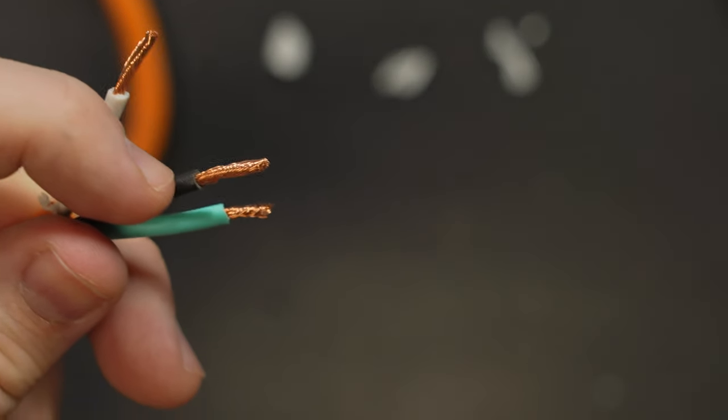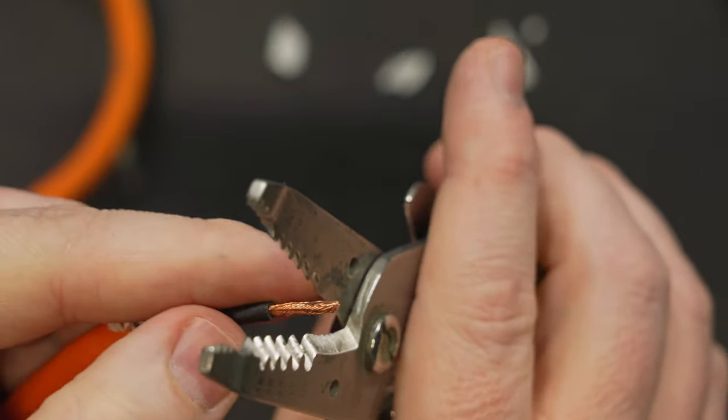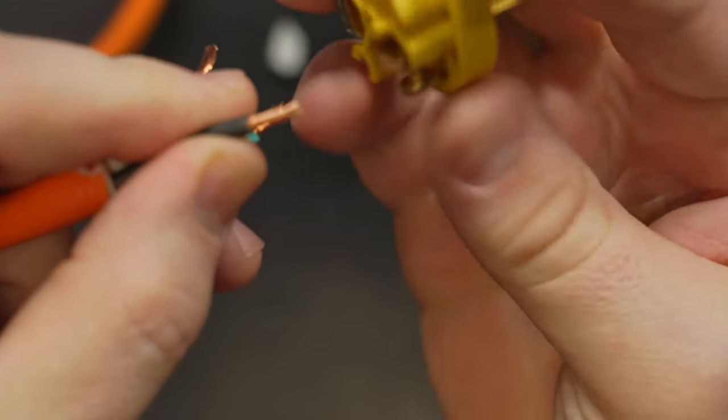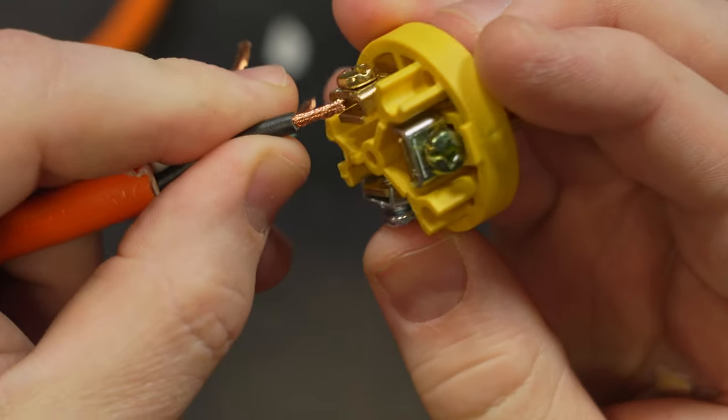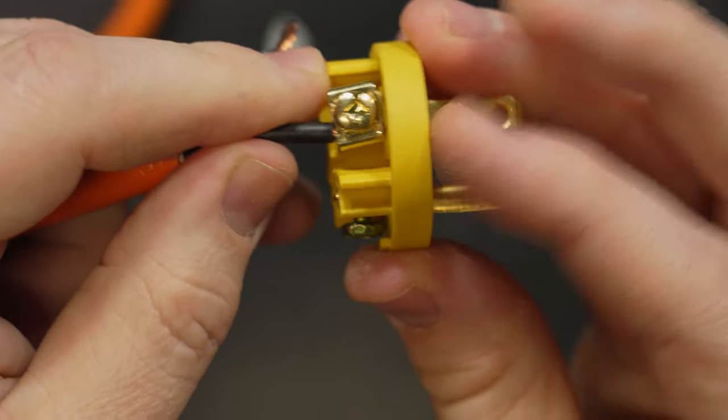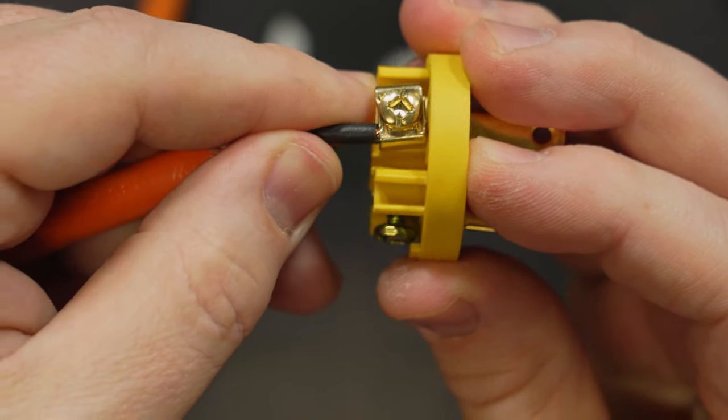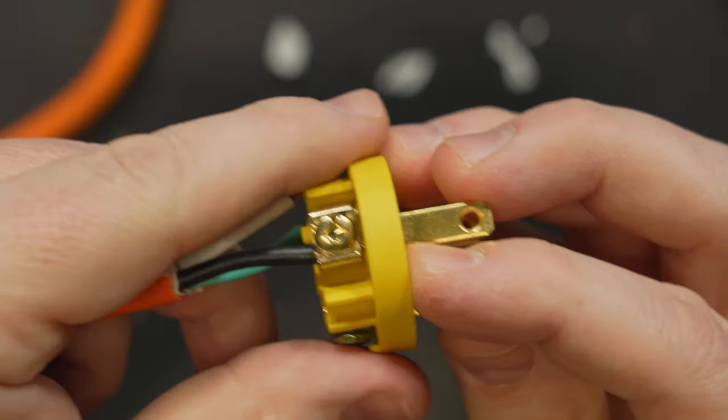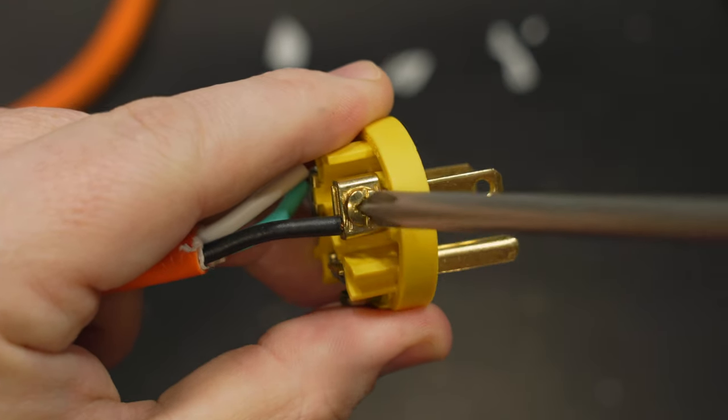So I'm going to use my wire cutters to trim off a little bit of that extra conductor. Okay with that cut a little bit shorter let's check and see how well that fits. That's much better. See how the insulation comes right up to the edge of the screw? That's perfect. So now I can go ahead and just tighten down this screw.